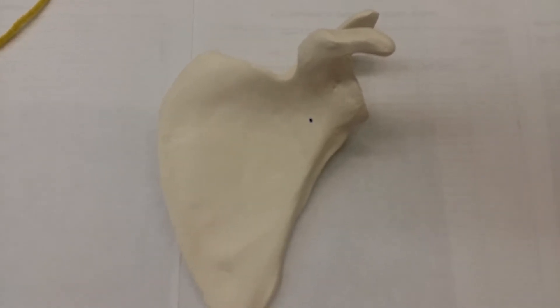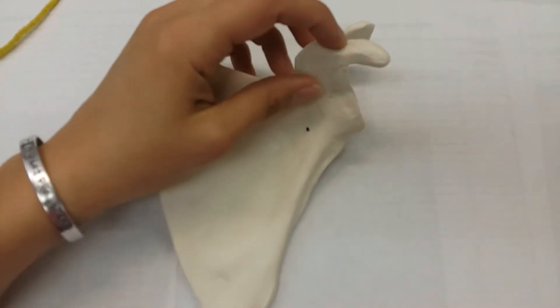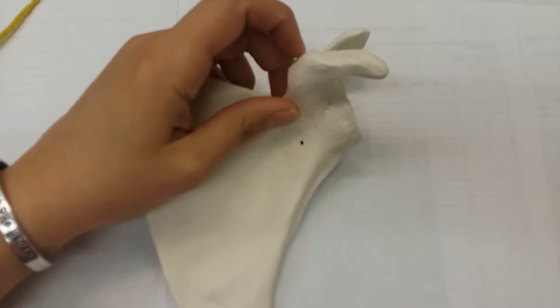This is a left scapula. There are a few structures that we need to know. The first one is going to be your coracoid process. That is this projection from the bone.